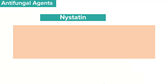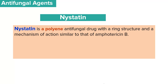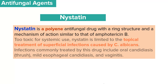Under this class of polyene antifungals, we also have another agent known as nystatin. Nystatin is a polyene antifungal drug with a ring structure and a mechanism of action similar to that of amphotericin B. Nystatin is known to be too toxic for systemic use; therefore, its use is limited to the topical treatment of superficial infections caused by Candida albicans. Infections commonly treated by this drug include oral candidiasis.